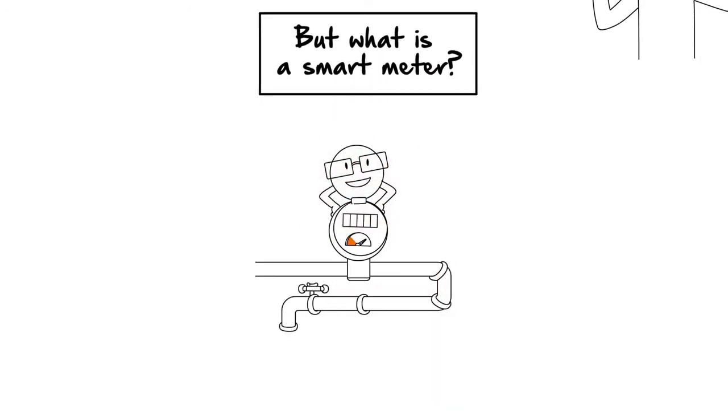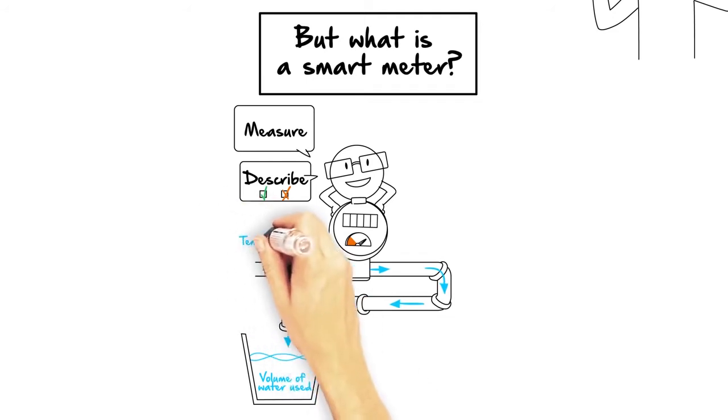A smart meter can continually measure and describe the volume of water used, as well as other data such as flow or temperature.